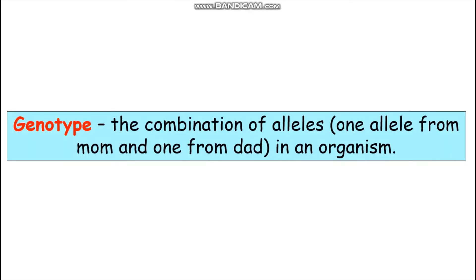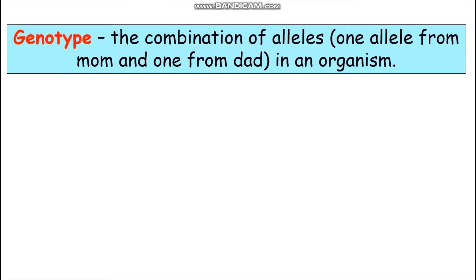Next term: genotype. A genotype is a combination of alleles — one from mom and one from dad — in an organism. Alleles are represented by letters: a capital letter for dominant alleles and lowercase letters for recessive alleles. In this video, I will be calling the capital letters BIG and the lowercase letters LITTLE. So a genotype is a combination of dominant and recessive alleles of a particular gene. These are examples of genotypes.